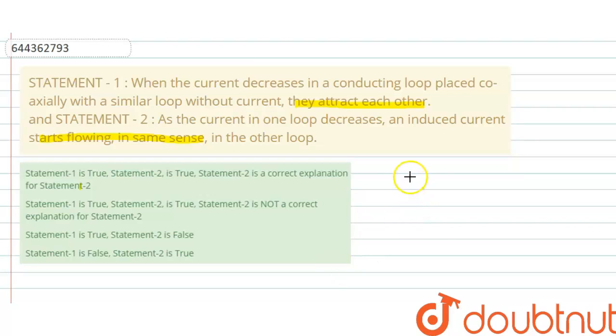Let's say there are two conducting loops placed coaxially to each other and if there is a current flowing through this loop, let's say I, due to which there is a magnetic field inside this loop due to this current. And if this current is decreasing, that magnetic flux through this loop will decrease.